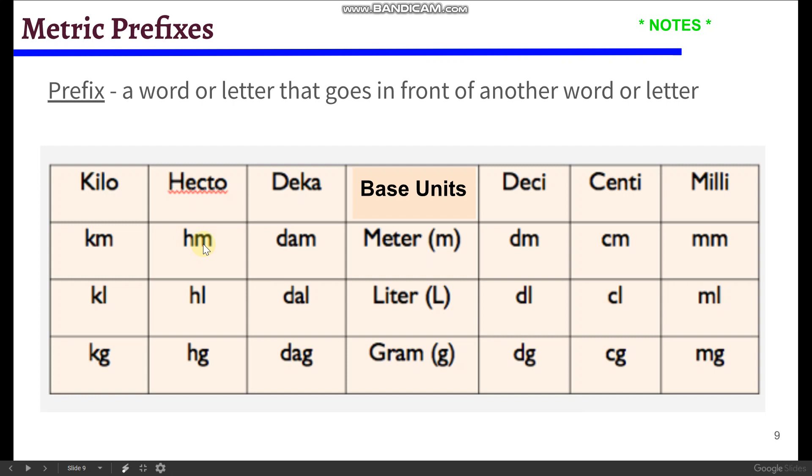A hectometer, that means 100 meters. Decameter is 10 meters. Meter is a meter, so we call this a base unit. Decimeter is 1 tenth of a meter. Centimeter is 1 one hundredth of a meter. A millimeter is 1 one thousandth of a meter. And then you can do the same thing with liters and grams. So, for example, a hectogram is 100 grams. A deciliter is 1 tenth of a liter.